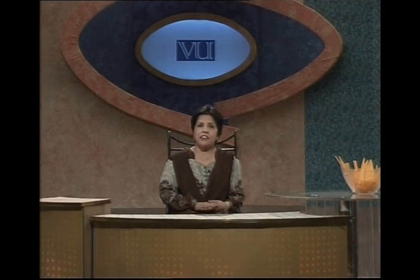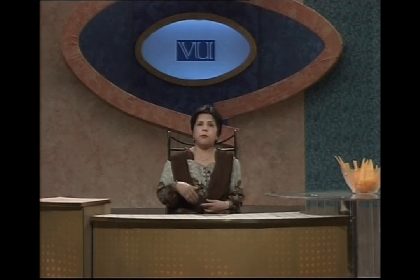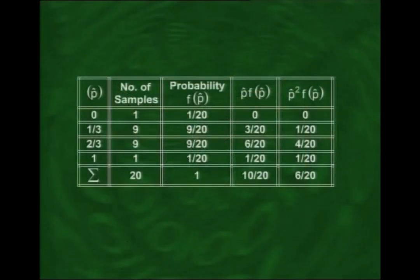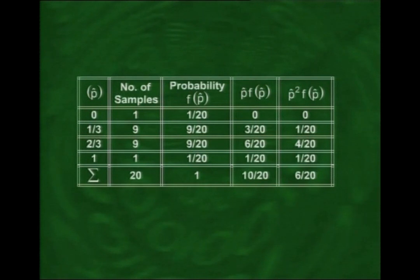This is the same procedure used for the sampling distribution of x-bar. Dividing each frequency by the total frequency 20 gives the probabilities: P(p-hat = 0) = 1/20, P(p-hat = 1/3) = 9/20, P(p-hat = 2/3) = 9/20, and P(p-hat = 1) = 1/20. Drawing the graph of this sampling distribution of p-hat, we find it is absolutely symmetrical.